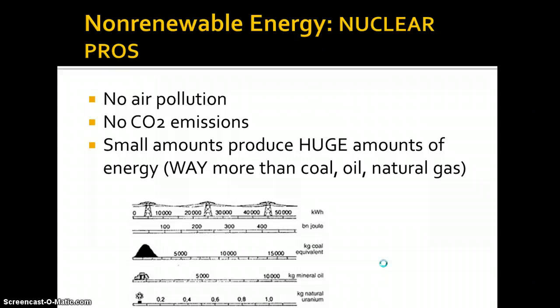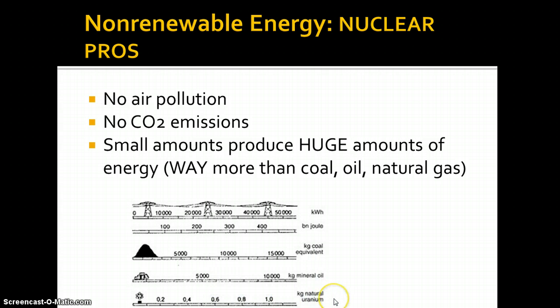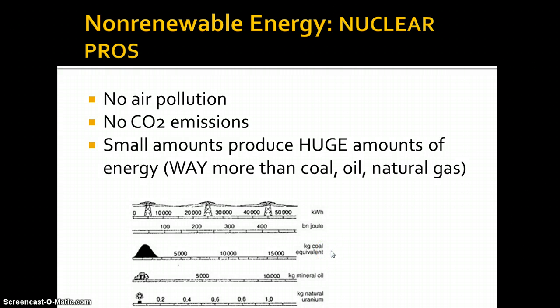Pros to using nuclear: there is zero air pollution and zero CO2 emissions. A very small amount of uranium produces a huge amount of energy — far more than coal, oil, and natural gas combined. This diagram shows that 1.0 kilogram of uranium is equivalent to 10,000 kilograms of oil or just under 15,000 kilograms of coal to produce the same amount of energy. A little goes a very long way — of all options for producing energy, nuclear produces the most.